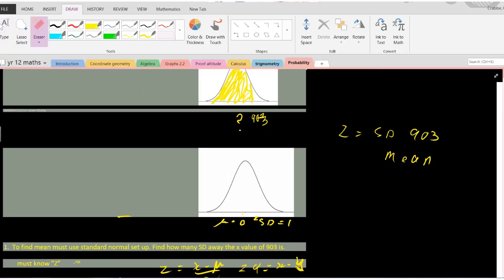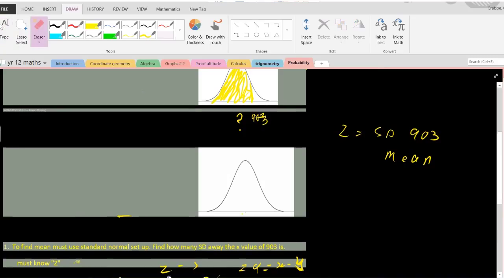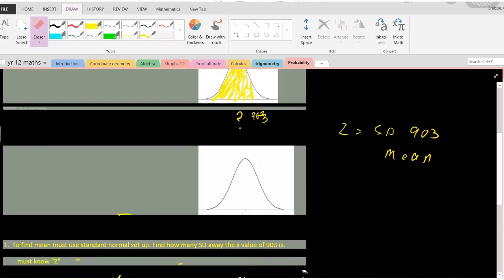What we do is we look at standard normal, which we've talked about briefly before. A standard normal graph has a mean of zero and a standard deviation of one. We can use that to help us find our desired z, which is the distance that 903 is away from the mean, so we standardize that.